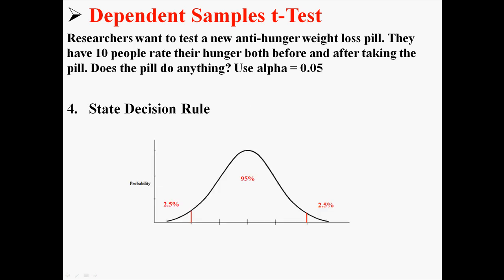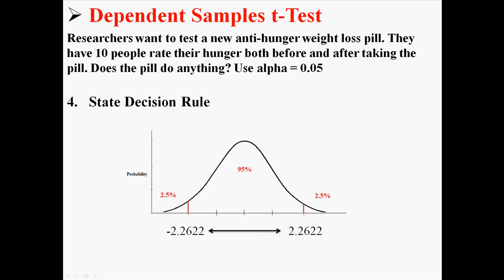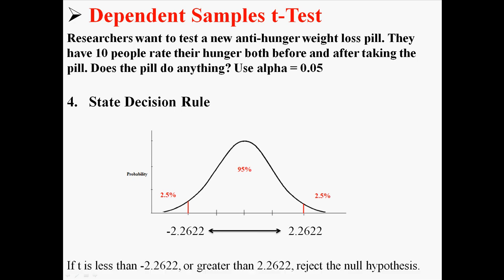Now we state our decision rule. With alpha of 0.05, we're looking for the 5% of values that are rare. We need to find the t-score associated with those critical boundaries on the distribution. Using the t-table with alpha 0.05 and 9 degrees of freedom, our critical value is 2.262. So if t falls outside of negative 2.26 to positive 2.26, we reject the null hypothesis.